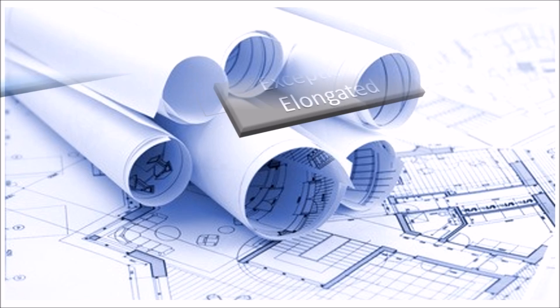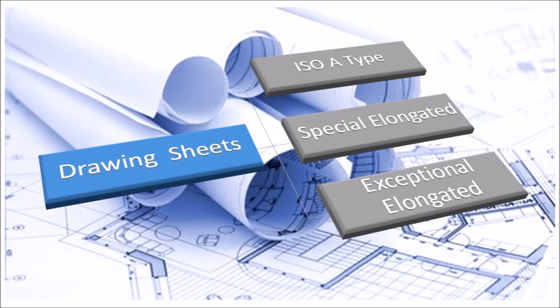Selection of a drawing sheet is first and foremost part of engineering drawing. There are three types of sheets: ISO A type, special elongated, exceptional elongated sheet.